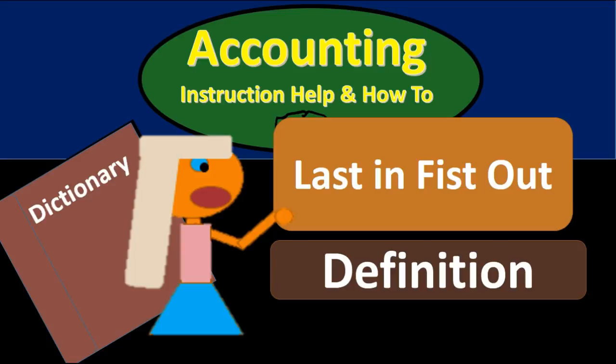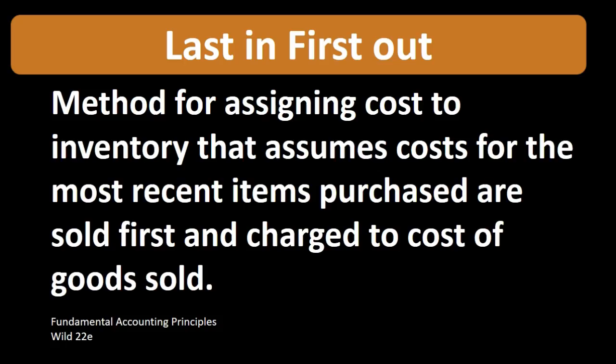In this lecture we will define last in first out. According to Fundamental Accounting Principles, 22nd edition, the definition of last in first out is: a method for assigning cost to inventory that assumes costs for the most recent items purchased are sold first and charged to cost of goods sold.